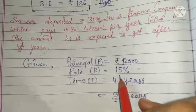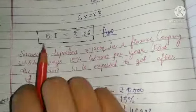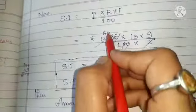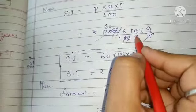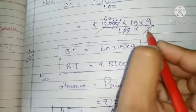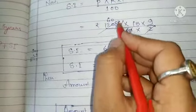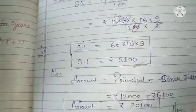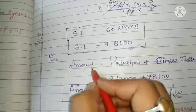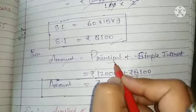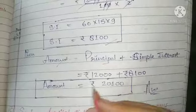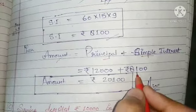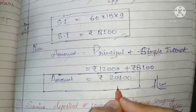Applying the formula SI = PRT/100: Principal = 12,000, Rate = 15, Time = 9/2. The 2 will cancel with 100 giving 50, so SI = 12,000 × 15 × 9 / 200. Solving this gives SI = Rs. 8,100. Then Amount = Principal + SI = 12,000 + 8,100 = Rs. 20,100.